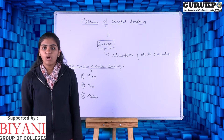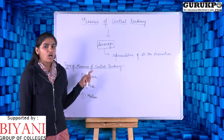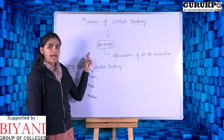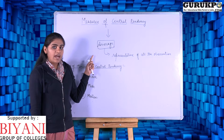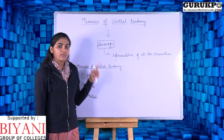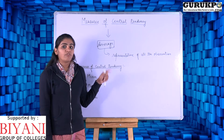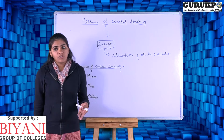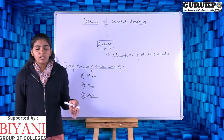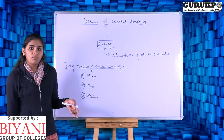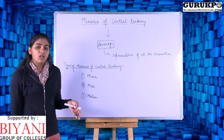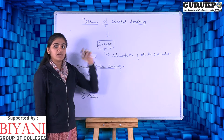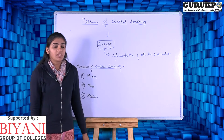As we all know, central tendency depends ultimately on the average. The average denotes a representative of all the observations, because it is a central part of all observations or all the distribution. Thereby it is known as the Measures of Central Tendency.